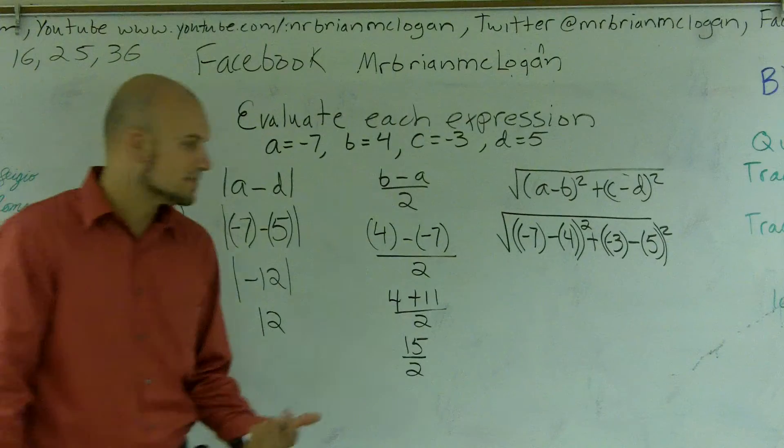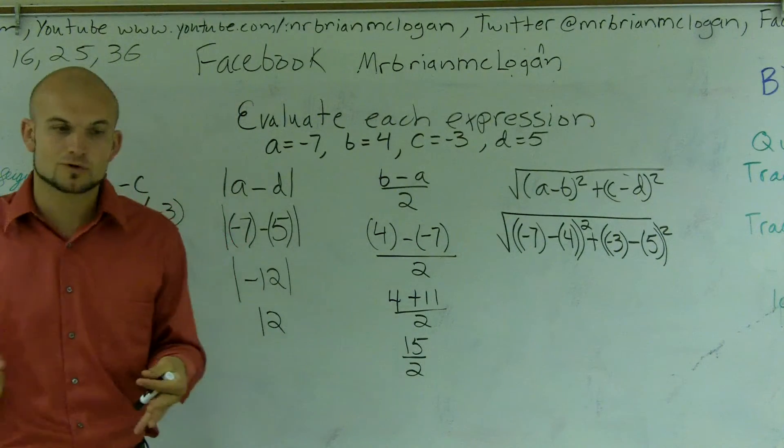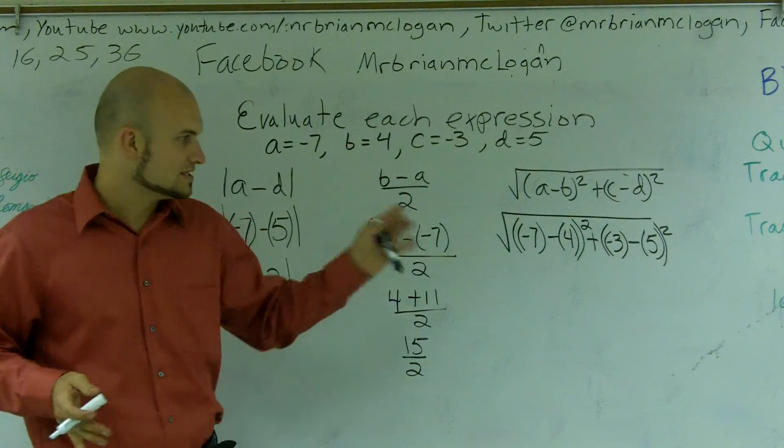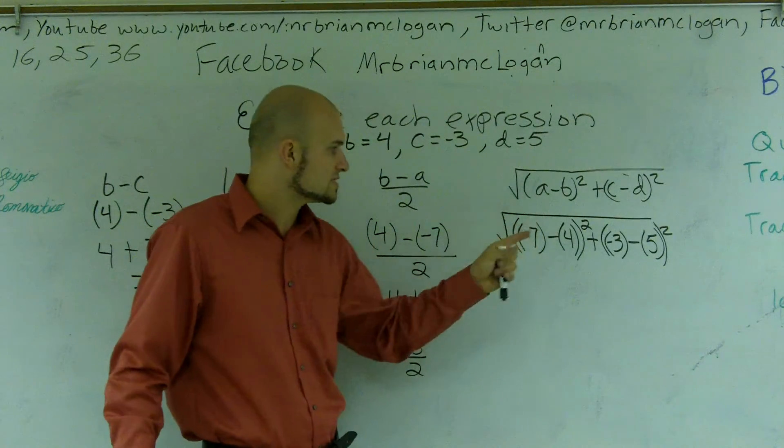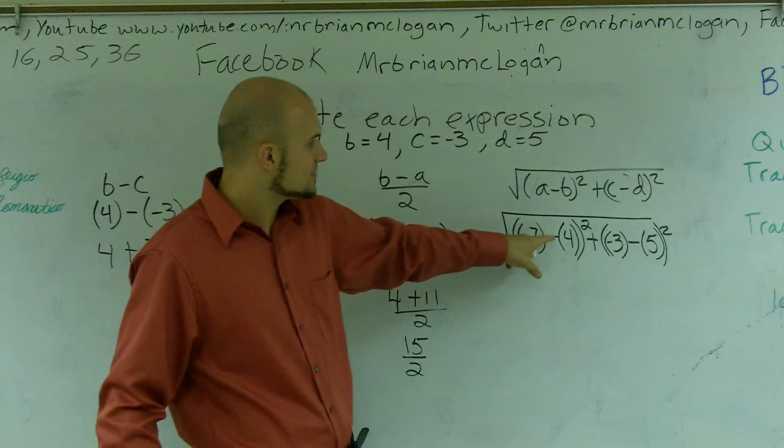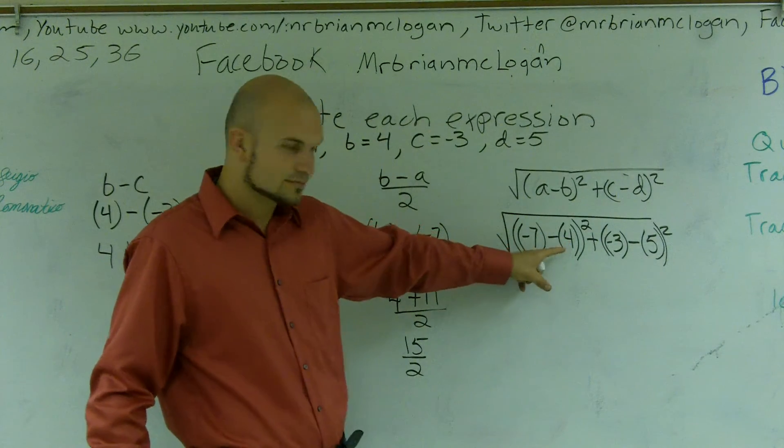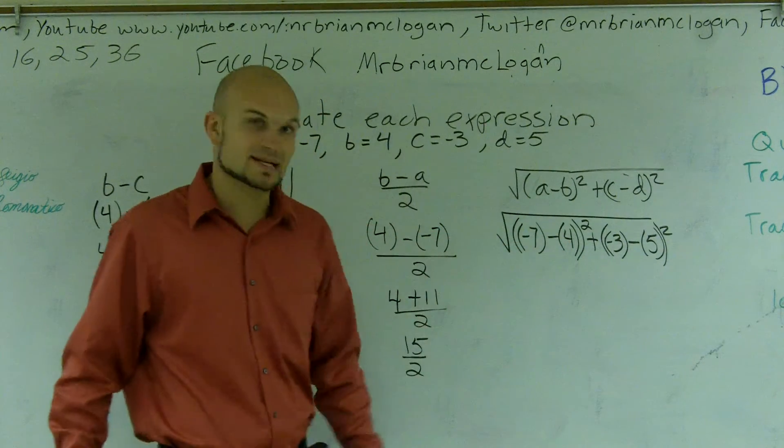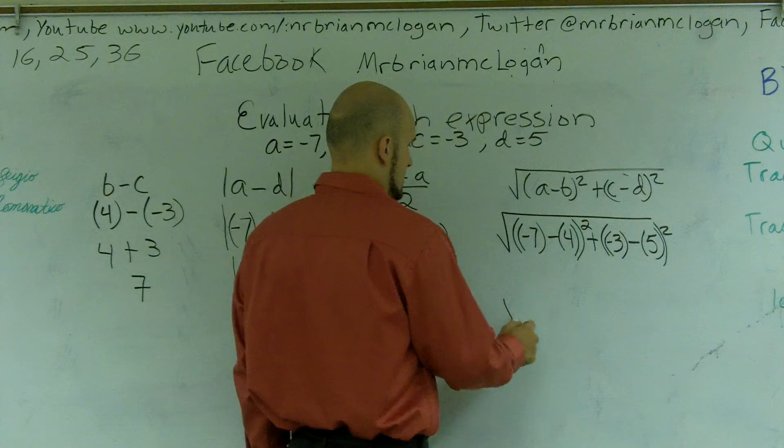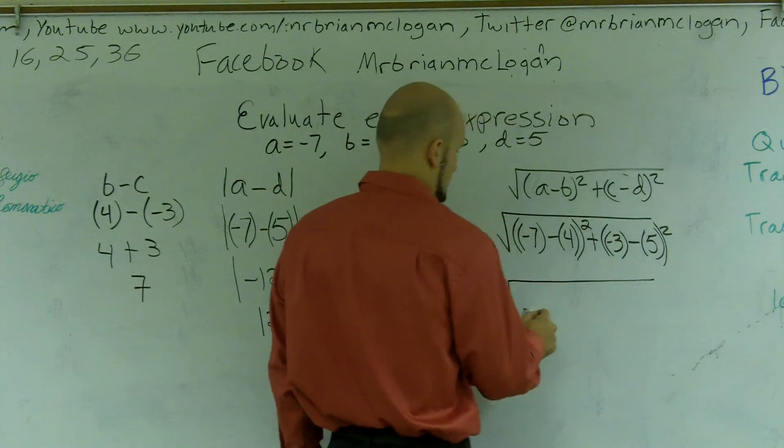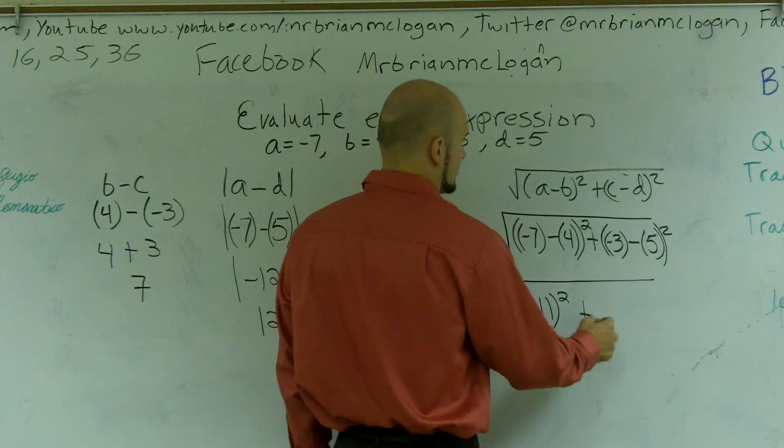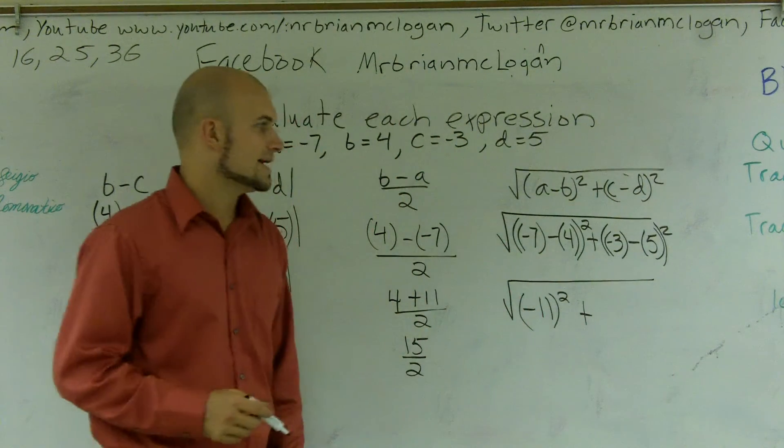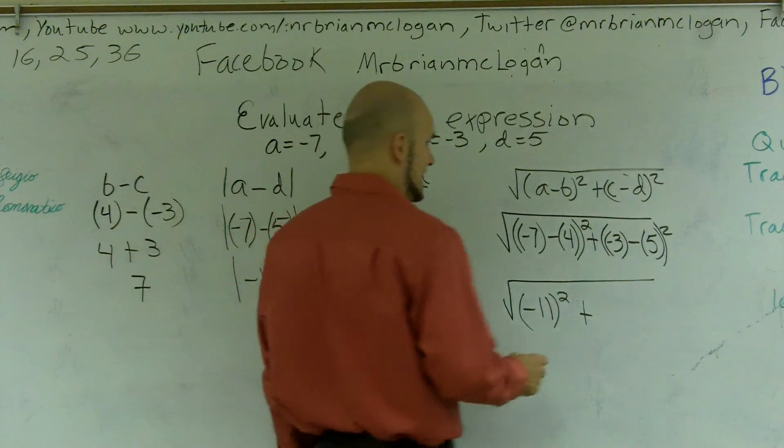OK. Now, one thing you need to remember is PEMDAS, or rules of order of operations. So I have all these values. Remember, when doing PEMDAS, you always want to do what's inside the innermost parentheses first. So here I have negative 7 minus 4. Well, negative 7 minus 4 is going to give me negative 11.